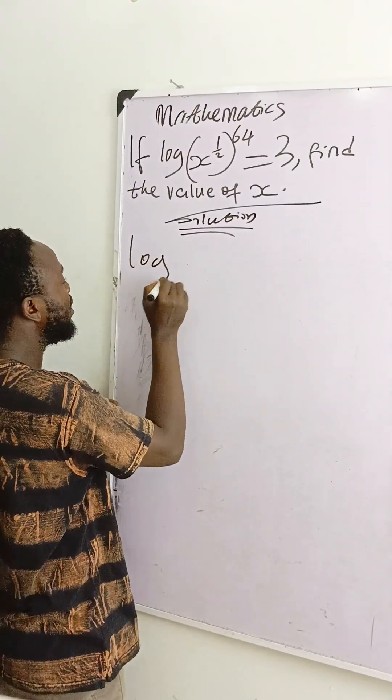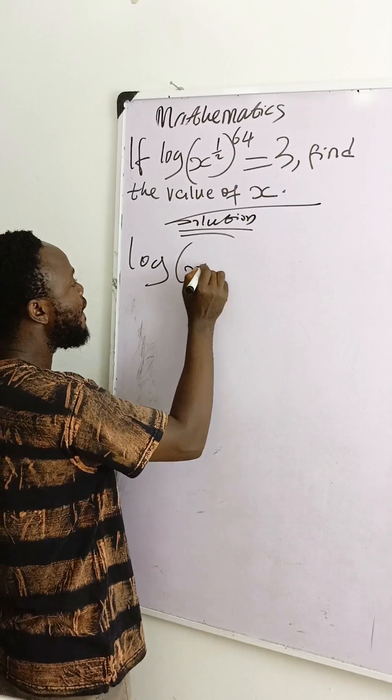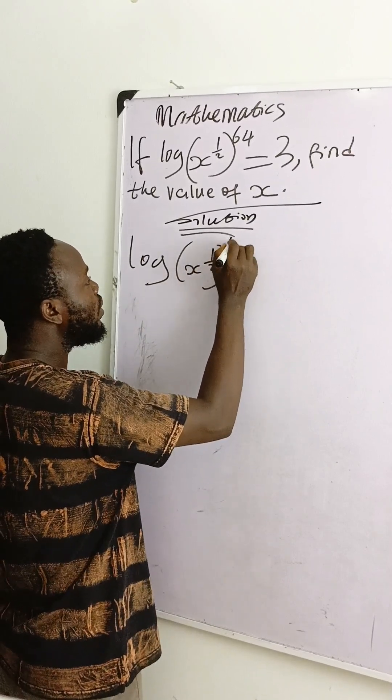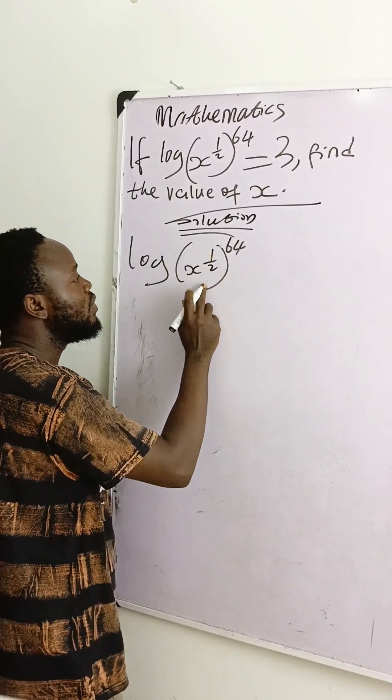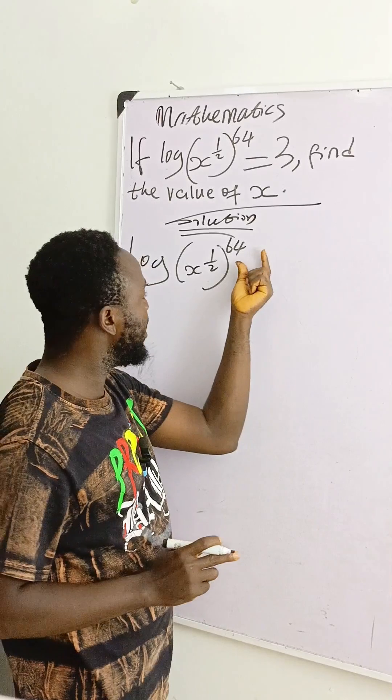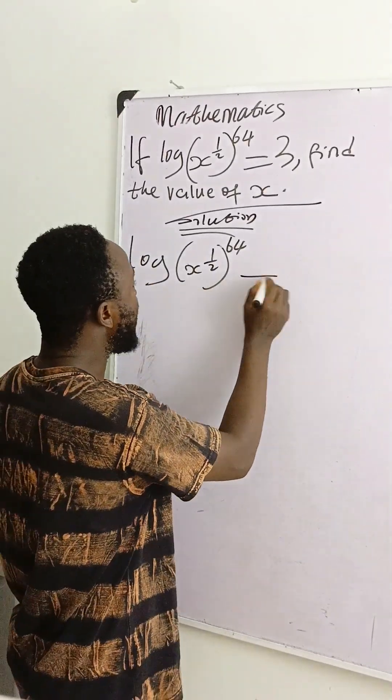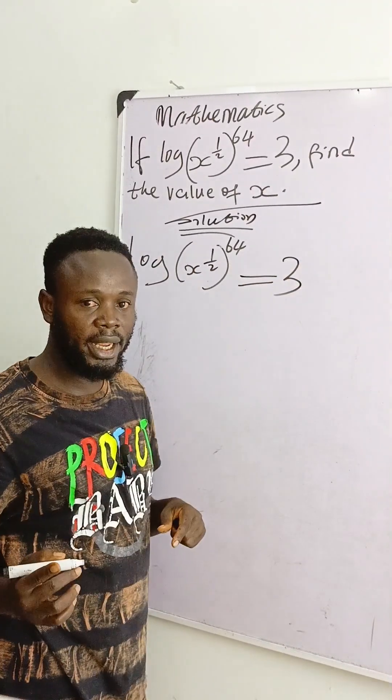If log of 64 base x raised to the power of 1/2 equals 3, find the value of x. The argument is 64 and the base is x raised to the power of 1/2.